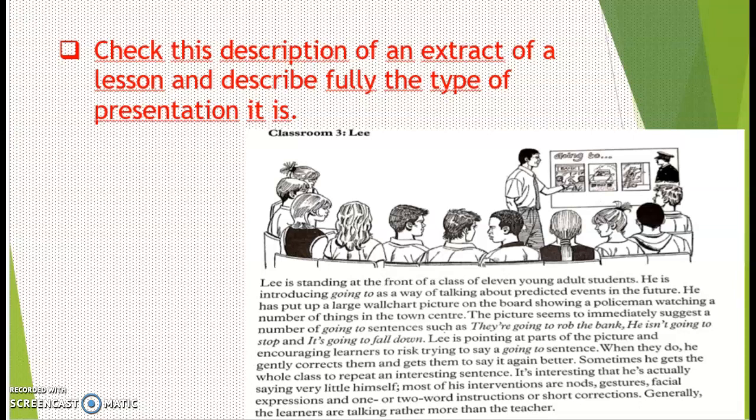Lee is standing at the front of a class of 11 young adult students. He is introducing Going To as a way of talking about predicted events in the future. He has put up a large wall-chart picture on the board showing a policeman watching a number of things in the town center. The picture seems to immediately suggest a number of going-to sentences, such as, They are going to rob the bank, he isn't going to stop, and it's going to fall down.